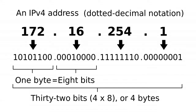So what is an IP? The internet protocol is an address assigned to each and every device or hardware connected to a network. It is used to uniquely identify a computer on the internet and allows it to communicate with other devices over the internet.